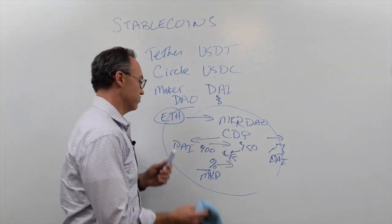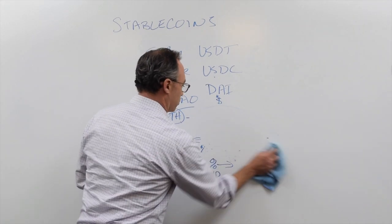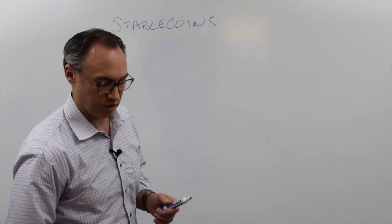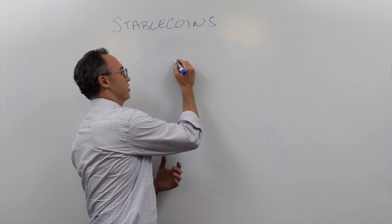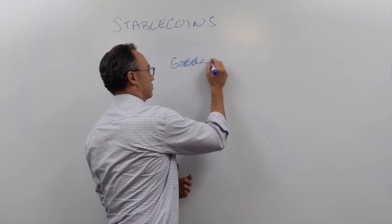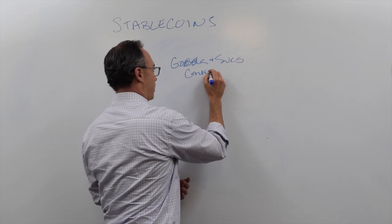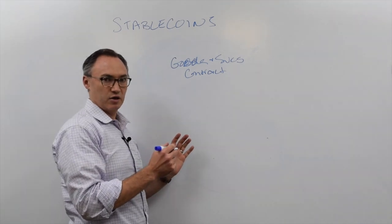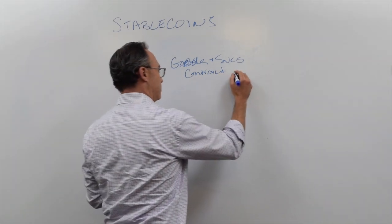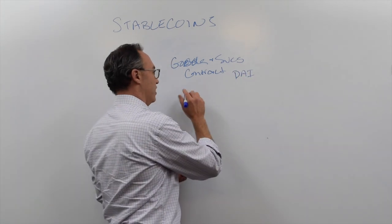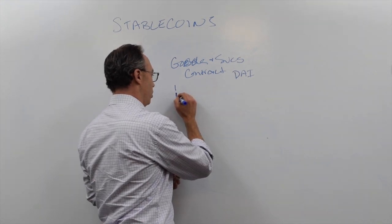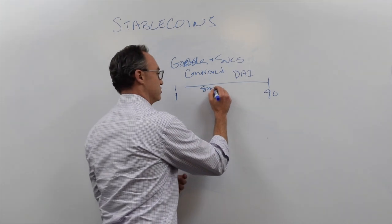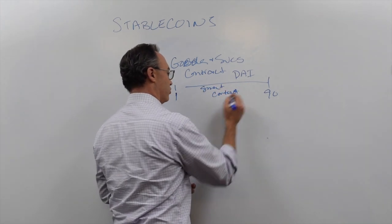Now that we have a stablecoin worth roughly $1, what do we do with it? From a finance perspective, you have so many more options. You can transact goods and services in smart contracts, knowing that what you denote in DAI or USDC on day one will still be worth roughly the same on day 90. That's really important because now we can create smart contracts and eliminate currency risk.